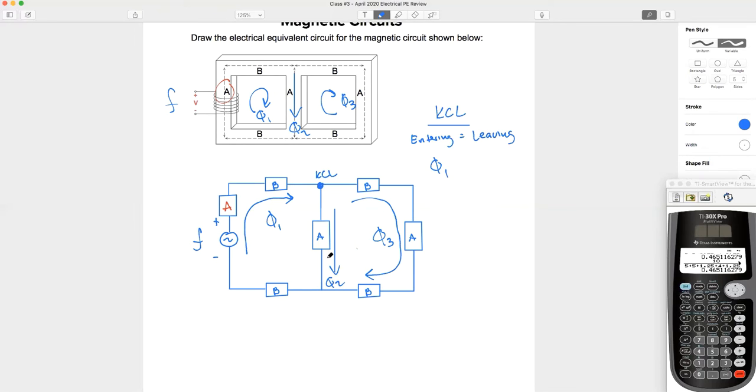How many fluxes are leaving that node? The other two. So here's my equal sign. Here's flux two and flux three. Look at that.